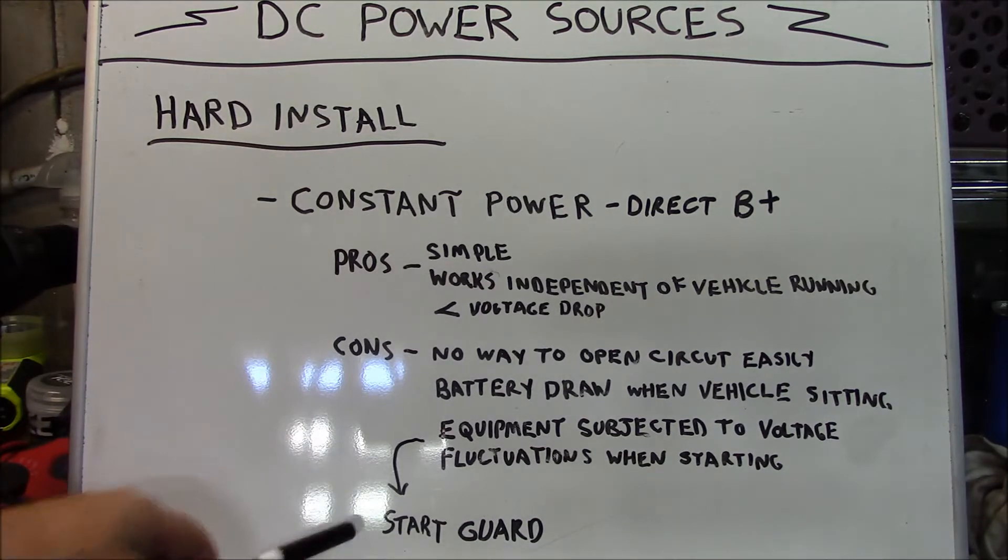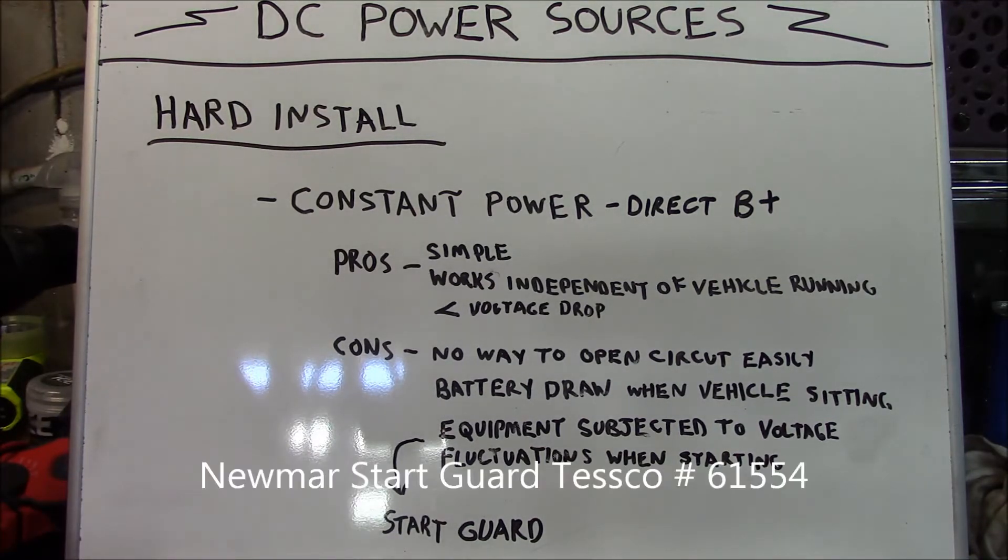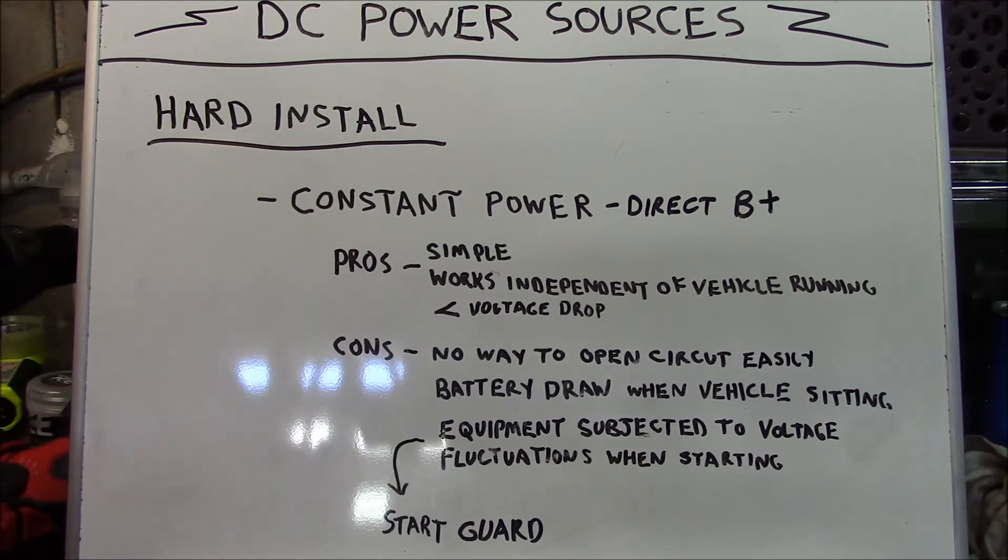One of the ways around this is to obtain an item called a start guard. Now a start guard they're not inexpensive but they're not overly expensive either. Generally those are rated for like 20 amps of draw and it's basically like a little UPS.